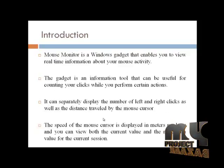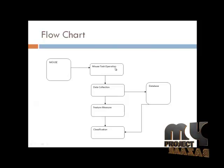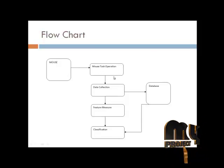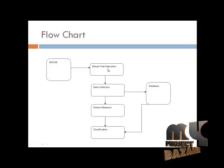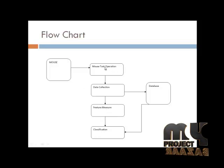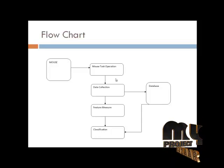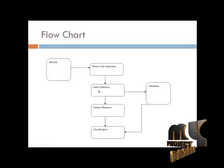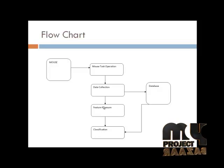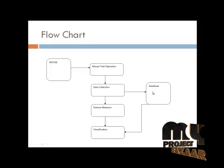Let us see the flow diagram. For mouse dynamic data, the main task operation involves collecting from databases. The data collection is through the task operation. There are two features added: the feature measurement computation covers single click, double click, right click, and left click. The collected information is retrieved from the databases, and the feature measurement — holistic and procedural features — are measured there. The measured values undergo classification, and the classification results are shown from the databases.